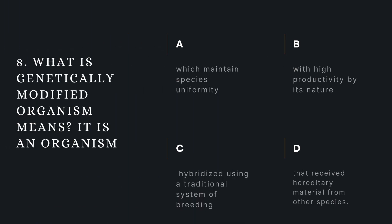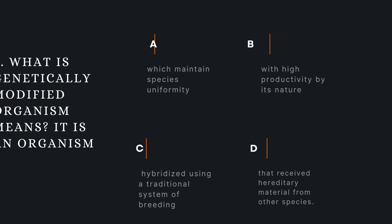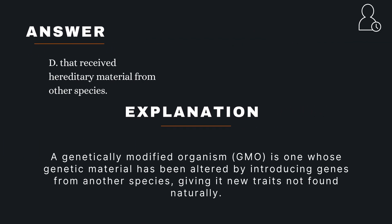Question 8. What does genetically modified organism mean? It is an organism: A — which maintains species uniformity; B — with high productivity by its nature; C — hybridized using a traditional system of breeding; D — that received hereditary material from other species. The correct answer is D — that received hereditary material from other species. Explanation: A genetically modified organism (GMO) is one whose genetic material has been altered by introducing genes from another species, giving it new traits not found naturally.